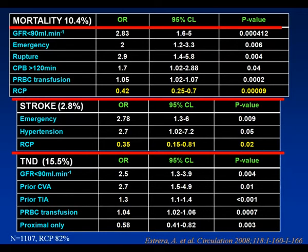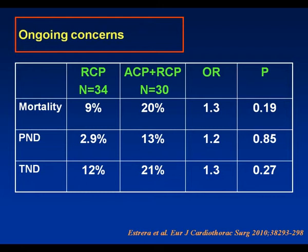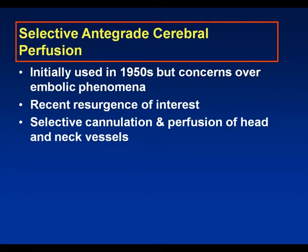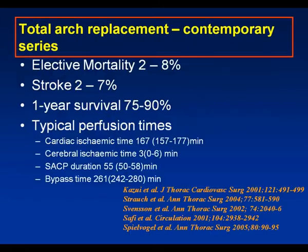The same group compared either retrograde cerebral perfusion or a combined technique of initial retrograde perfusion followed by antegrade perfusion, but paradoxically saw higher mortality in the antegrade group. Nevertheless, selective antegrade cerebral perfusion has become the mainstay of cerebral protection. In many series, elective mortalities for arch replacement are now less than 8%, stroke rates are low, one-year survival rates are high, and most centers undertaking SACP techniques achieve a very short cerebral ischemic time of three to six minutes.